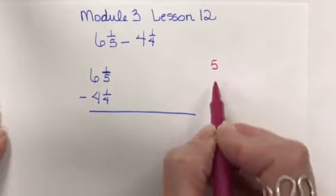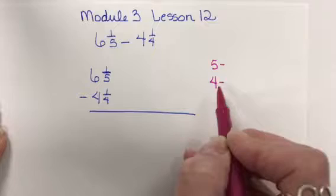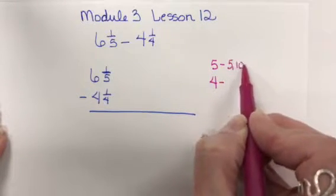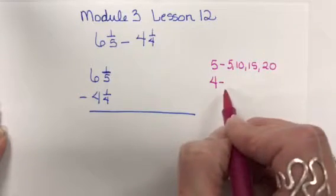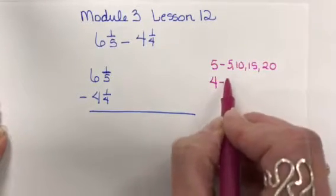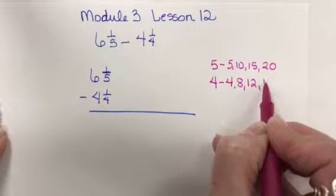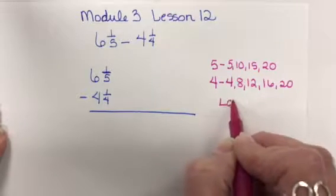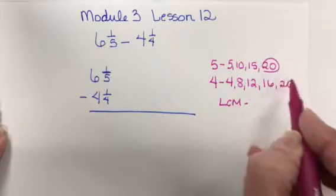you're looking for the least common multiple of 5 and 4. So the multiples of 5 are 5, 10, 15, 20. The multiples for 4 are 4, 8, 12, 16, 20. The least common multiple for 5 and 4 is 20.